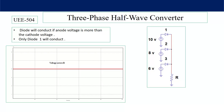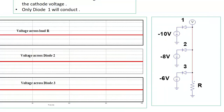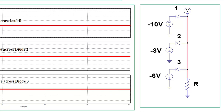Consider another circuit: three negative voltage sources are connected across the cathodes of three diodes — minus 10 V across diode one, minus 8 V across diode two, minus 6 V across diode three. From this we can say that only diode number one will conduct. When diode one conducts, the potential of cathodes becomes minus 10 V, so the voltage across diode two is −10 − (−8) = −2 V and across diode three it is −4 V.